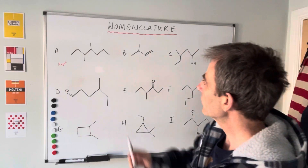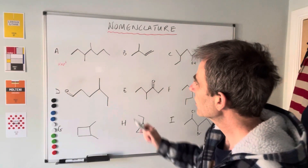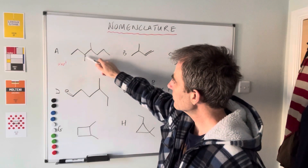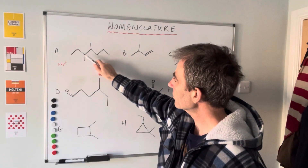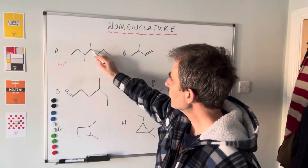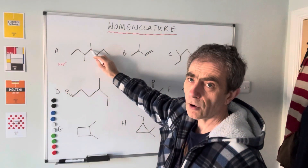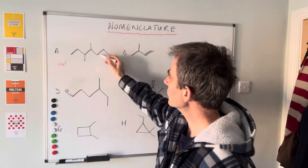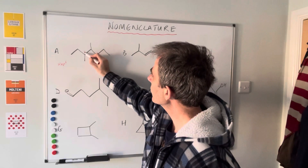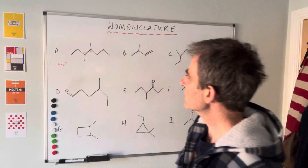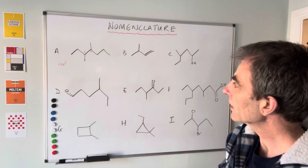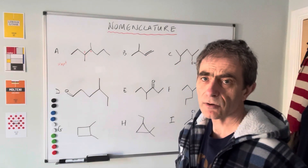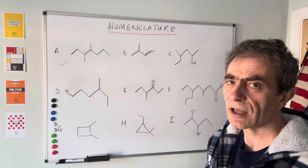Hept is the longest continuous chain. Counting from this side, we've got a methyl group on carbon number one, two, three — which would make that carbon number four. If we count the other way we get bigger numbers: one, two, three, four, five. So we've got to go on the lower numbers. It's 3,4-dimethylheptane.